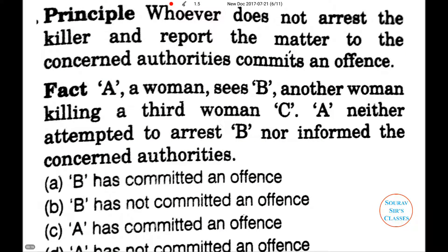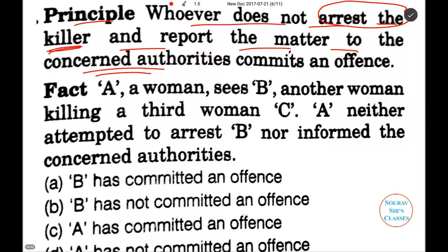Now let us look at the principle. The principle says whoever does not arrest the killer — the one who is committing the crime — and report the matter to the concerned authority, is hiding information from the concerned authority, not relaying the information they have, nor attempting to arrest the killer. Then it means you have committed an offense.